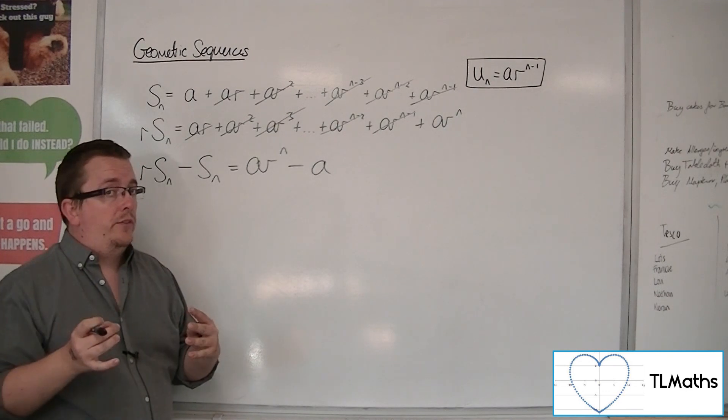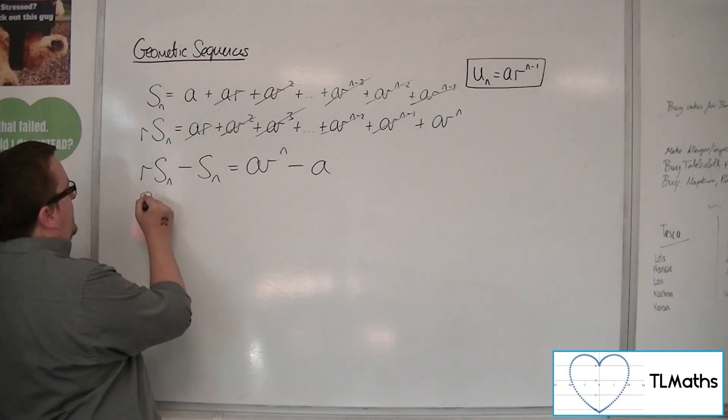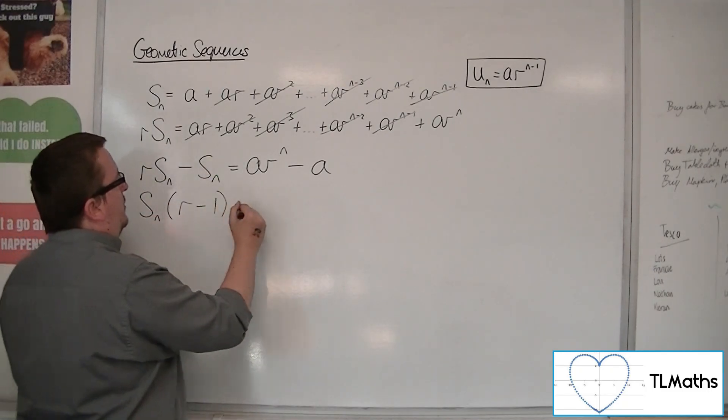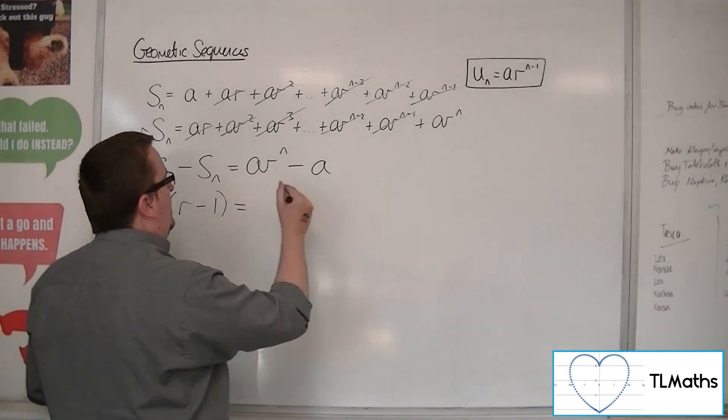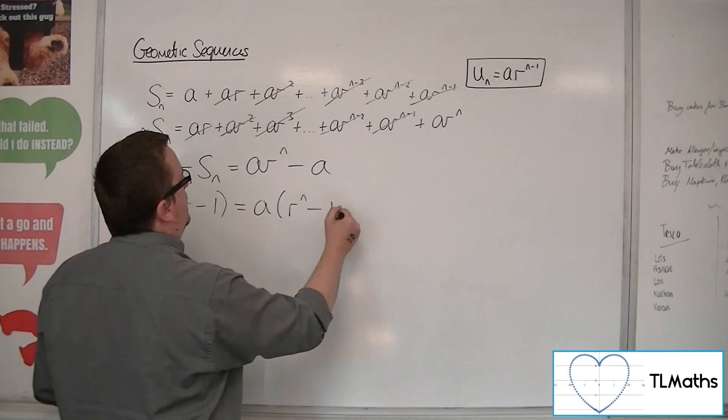Both sides of that equation can be factorized. So I could factor the S_n out of these two terms and have r minus 1 left. And factoring the a out of these two terms, I get a lots of r to the n minus 1.